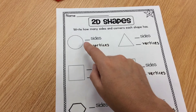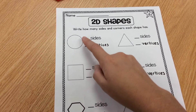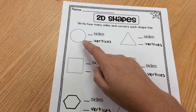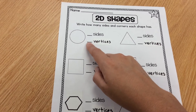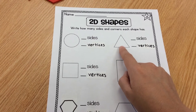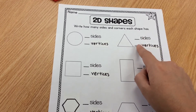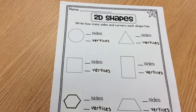Now you need to look at a circle and decide how many sides and how many vertices. Look at a triangle. Count how many sides, how many vertices.